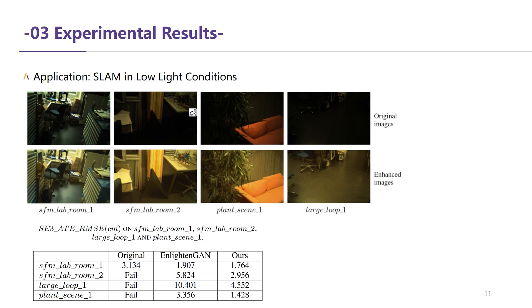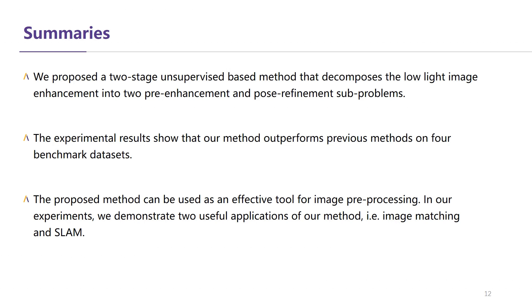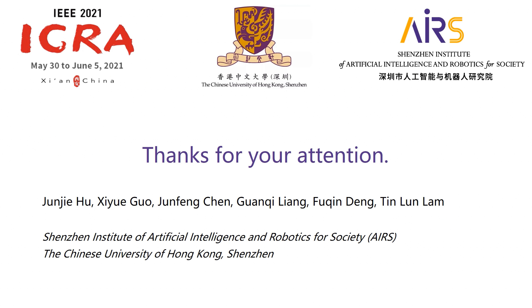In summary, in this paper we proposed a two-stage unsupervised-based method that decomposes low-light image enhancement into two pre-enhancement and post-refinement sub-problems. The experimental results show that our method outperforms previous methods on four benchmark datasets. The proposed method can be used as an effective tool for image pre-processing. In our experiments, we demonstrate two useful applications of our method, including image matching and SLAM. Thanks for your attention.